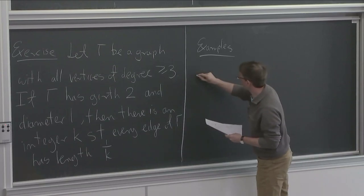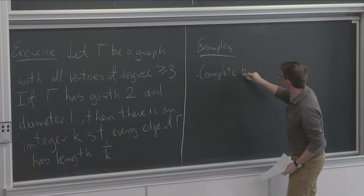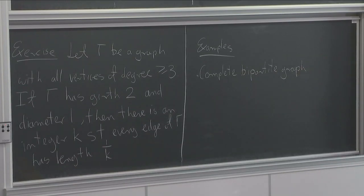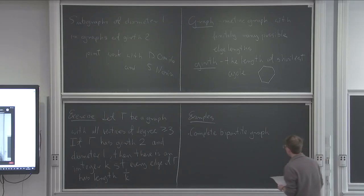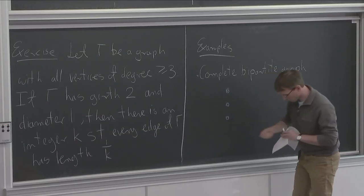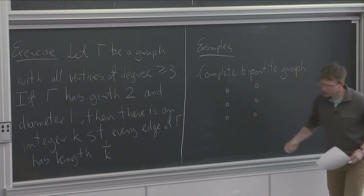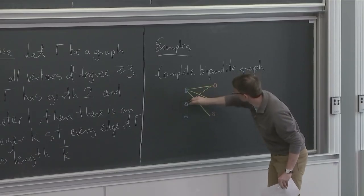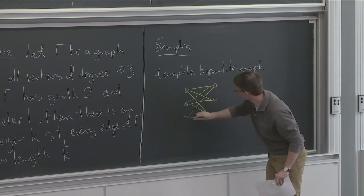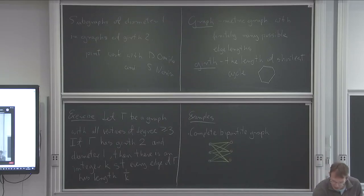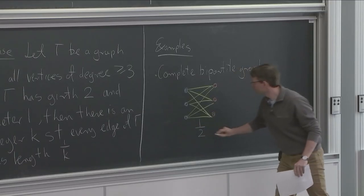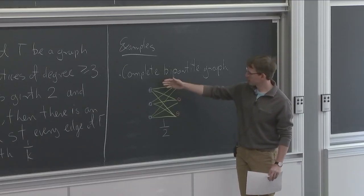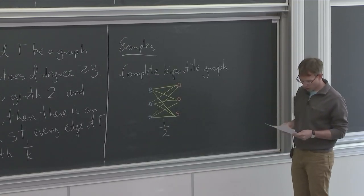The first example would be a complete bipartite graph. You take a bunch of vertices colored blue, a bunch of vertices colored red, connect all of them, and specify that each green edge has length one half. Hopefully you see that the shortest cycles have length 2 and that this graph has diameter 1. That's one example of such a graph.